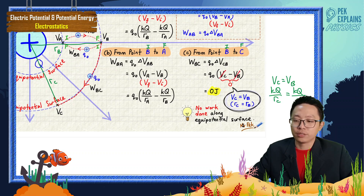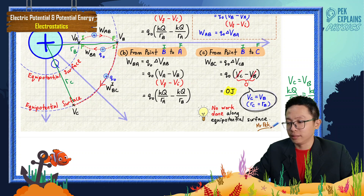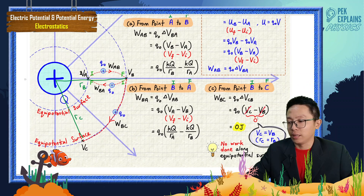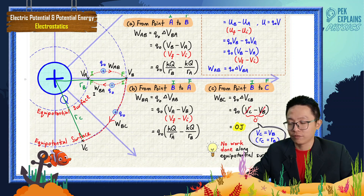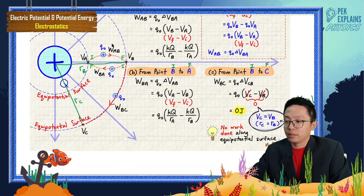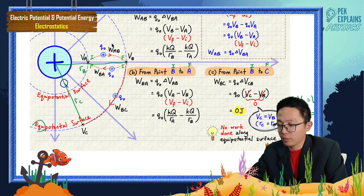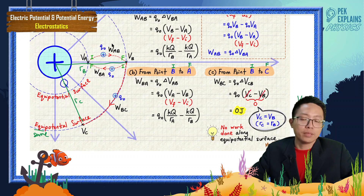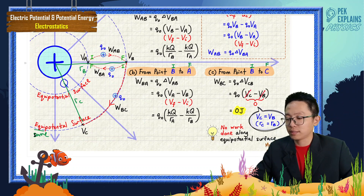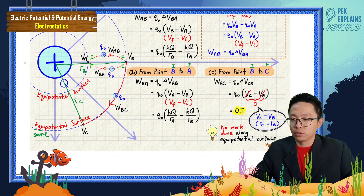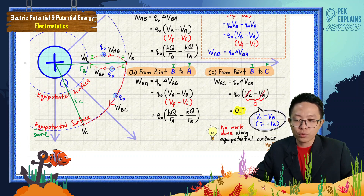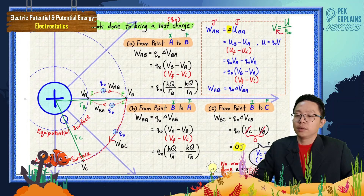This circle is actually an equipotential surface. The word 'equi' means same, so equipotential surface means a surface of same potential. Along the same equipotential surface the potential is the same, so V_c minus V_b = 0, giving zero work done to bring a test charge along an equipotential surface.